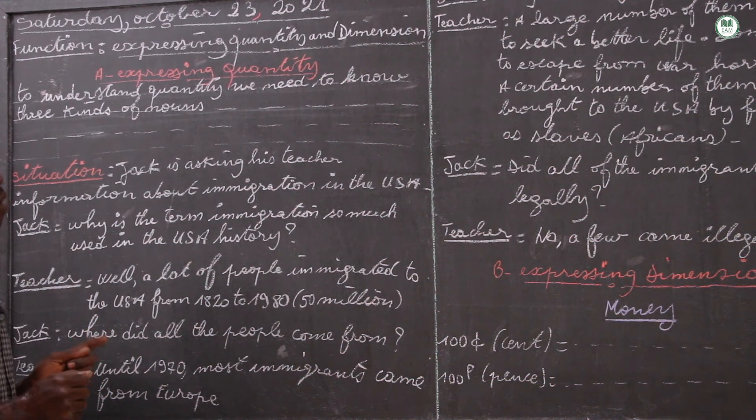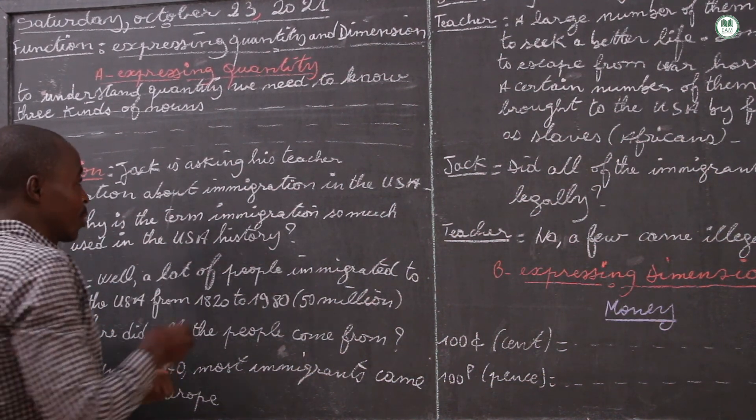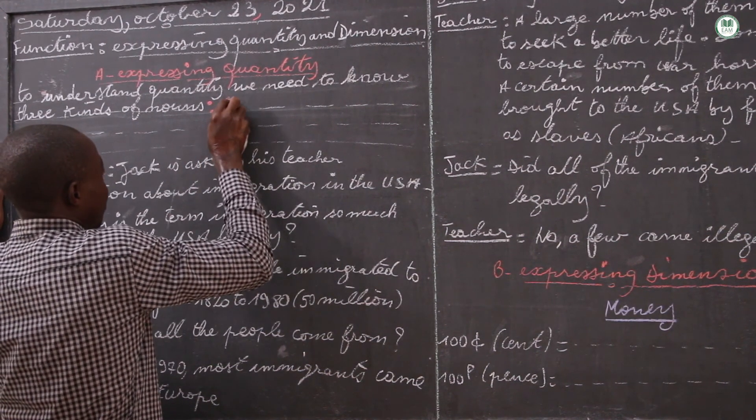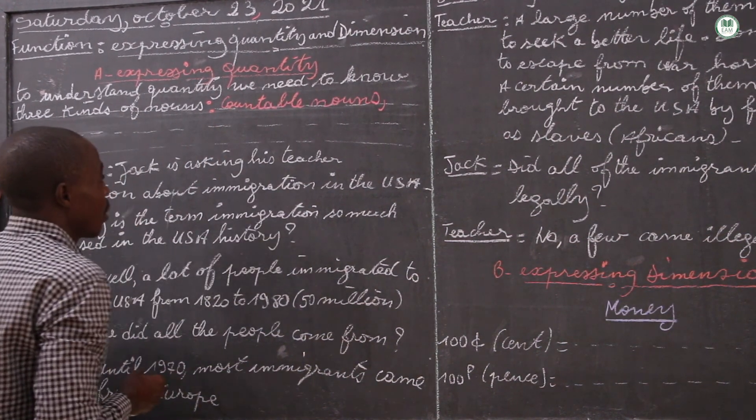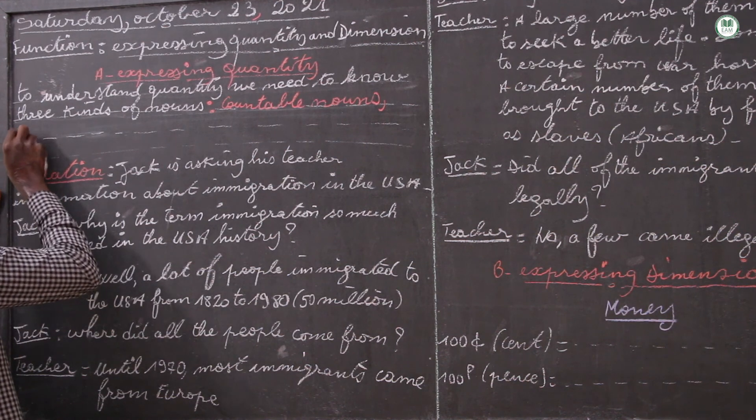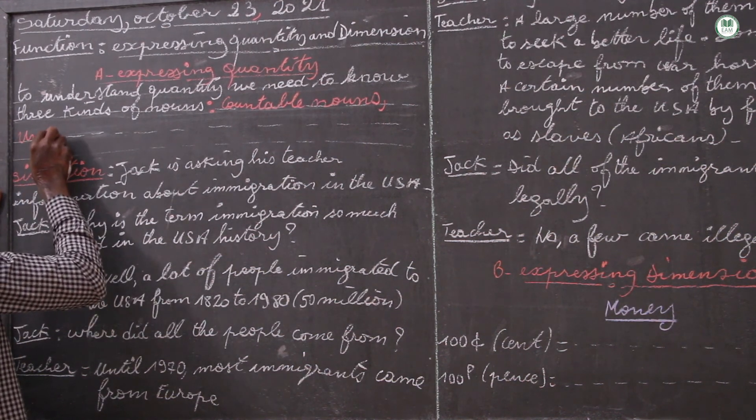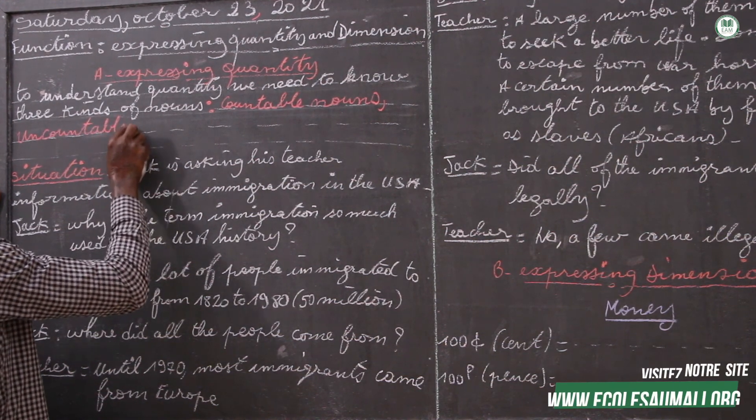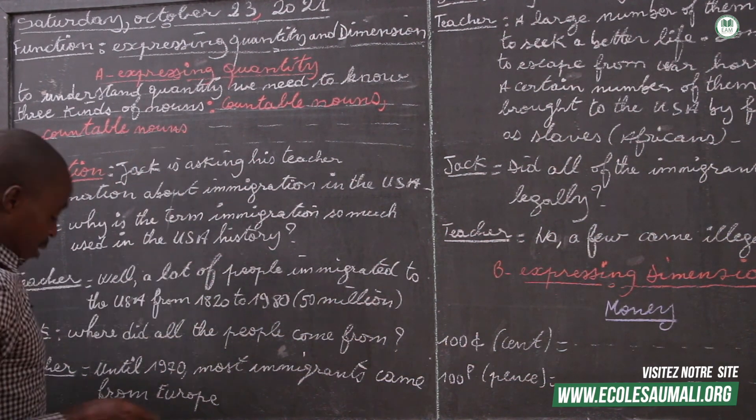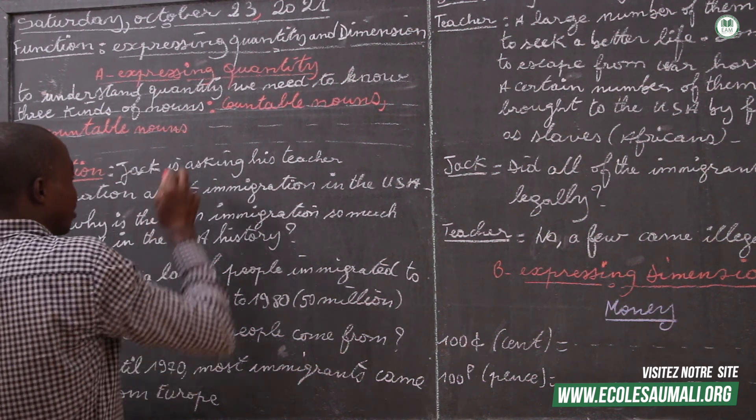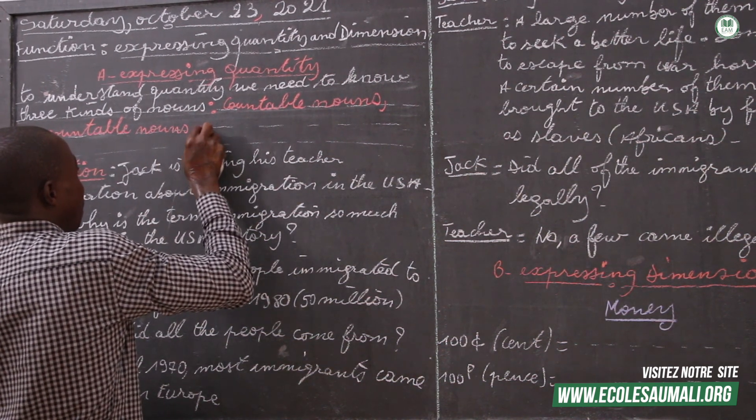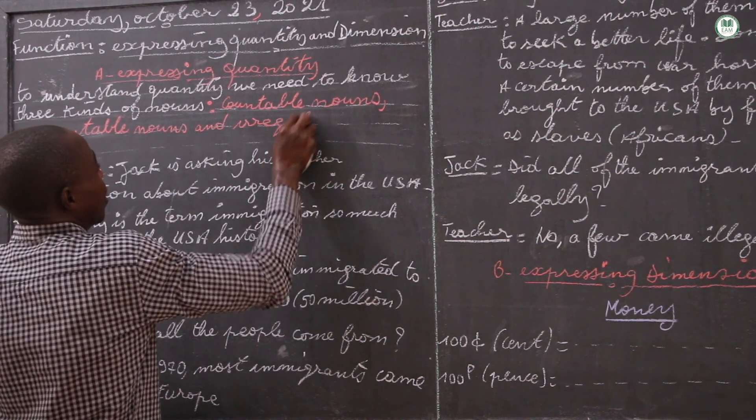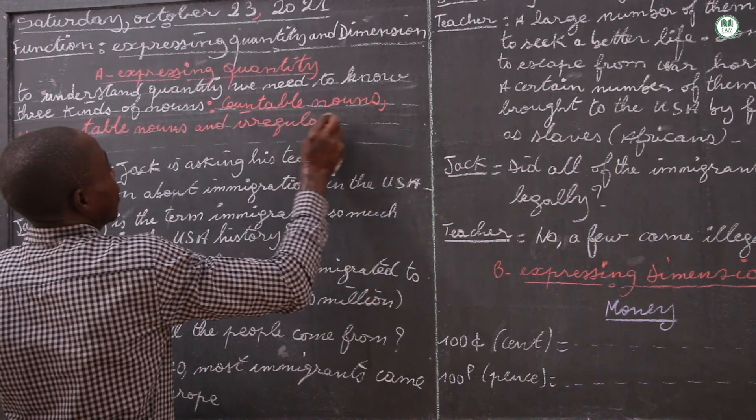Here are three kinds which we have: countable nouns, uncountable nouns, and irregular nouns.